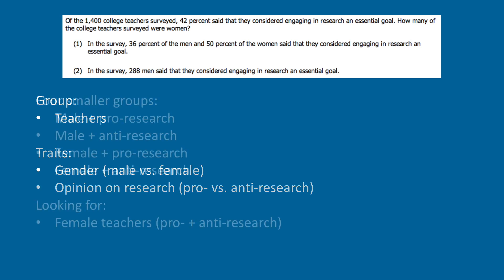This gives us four possible smaller groups that a teacher can fall into: group one, men who are pro-research; group two, men who are anti-research; group three, women who are pro-research; and group four, women who are anti-research.